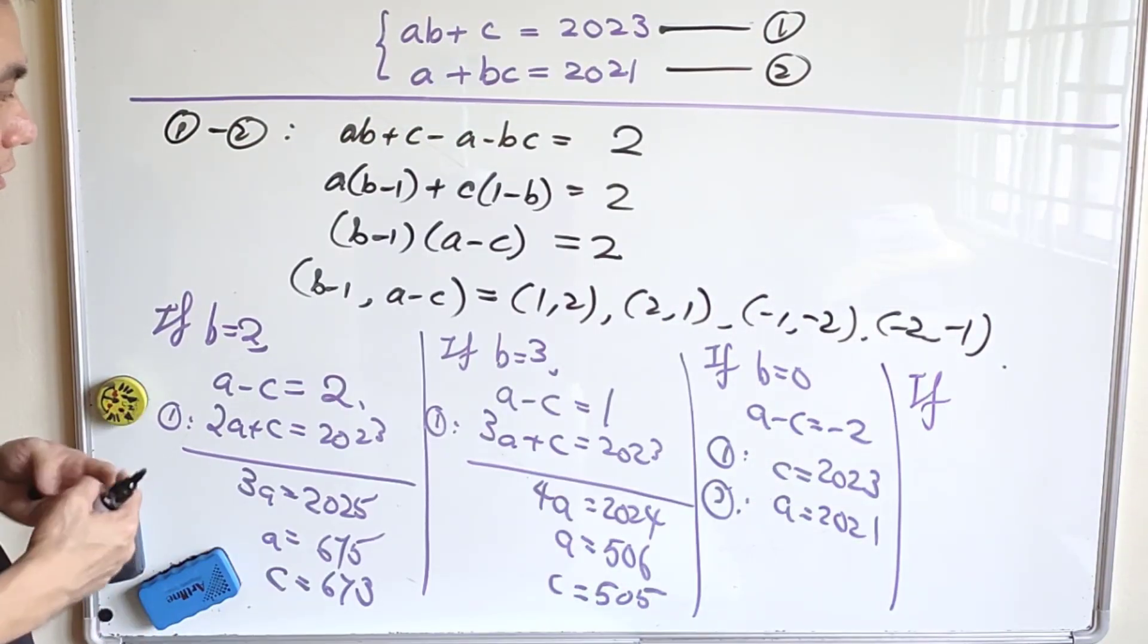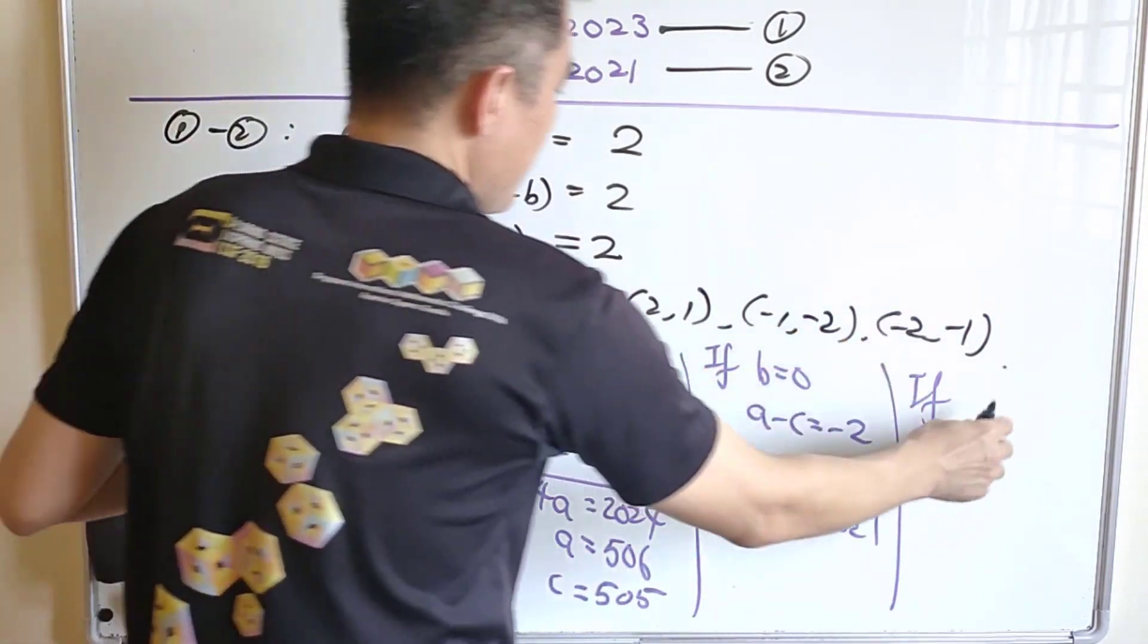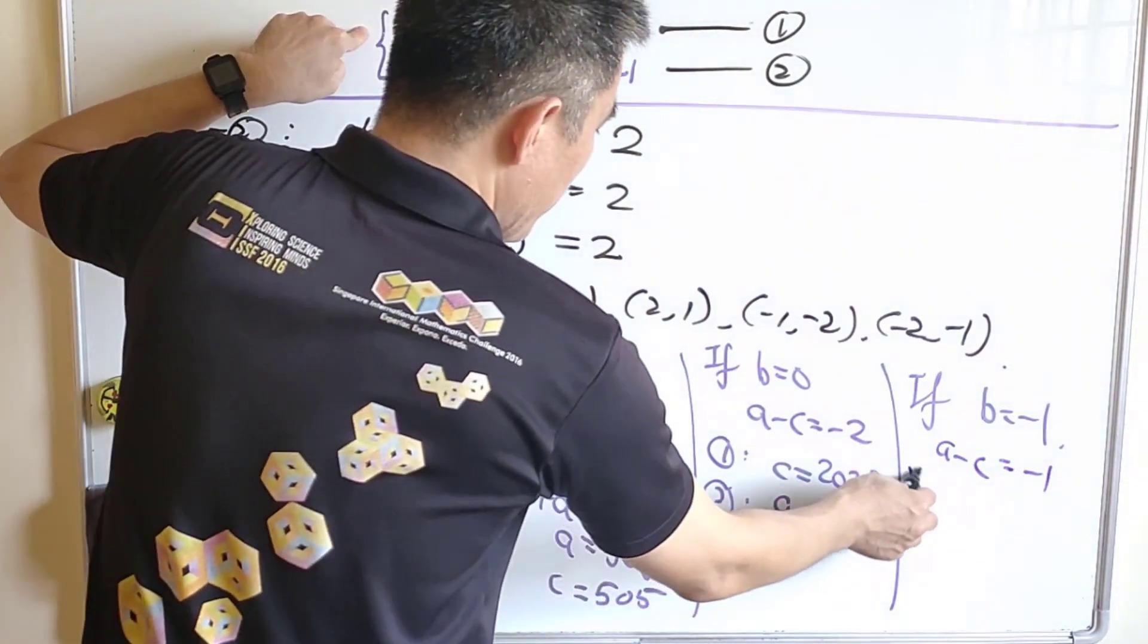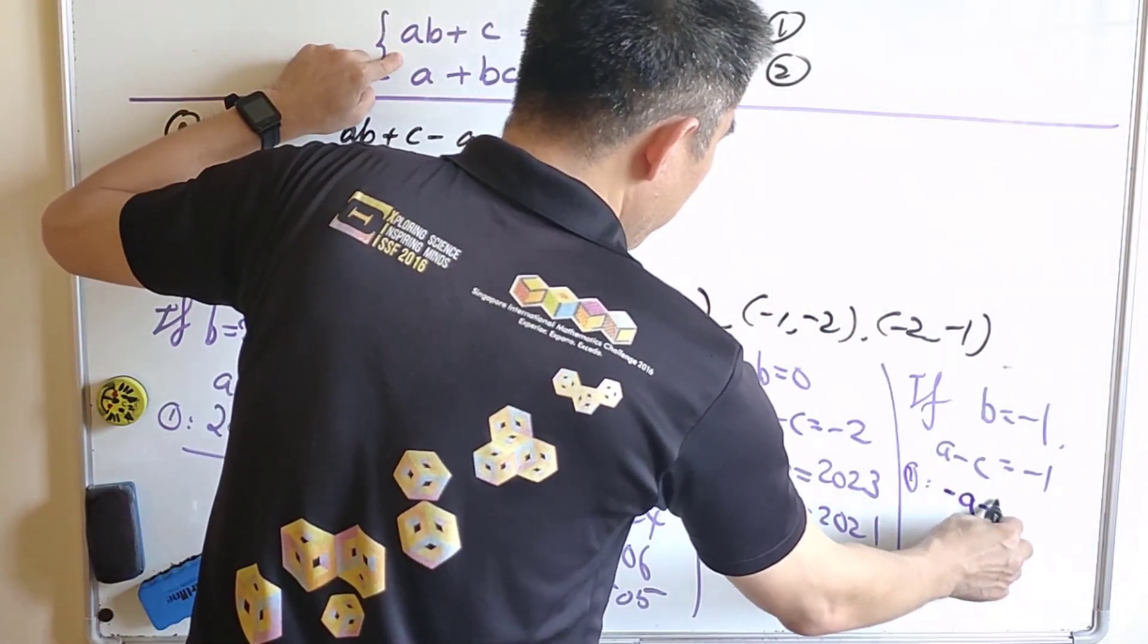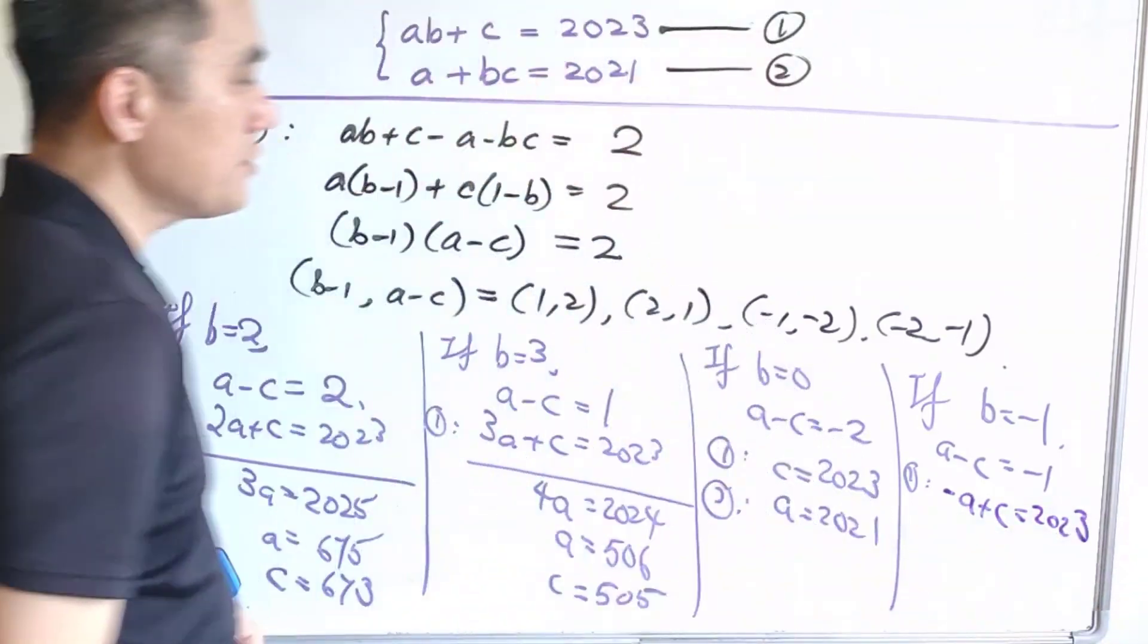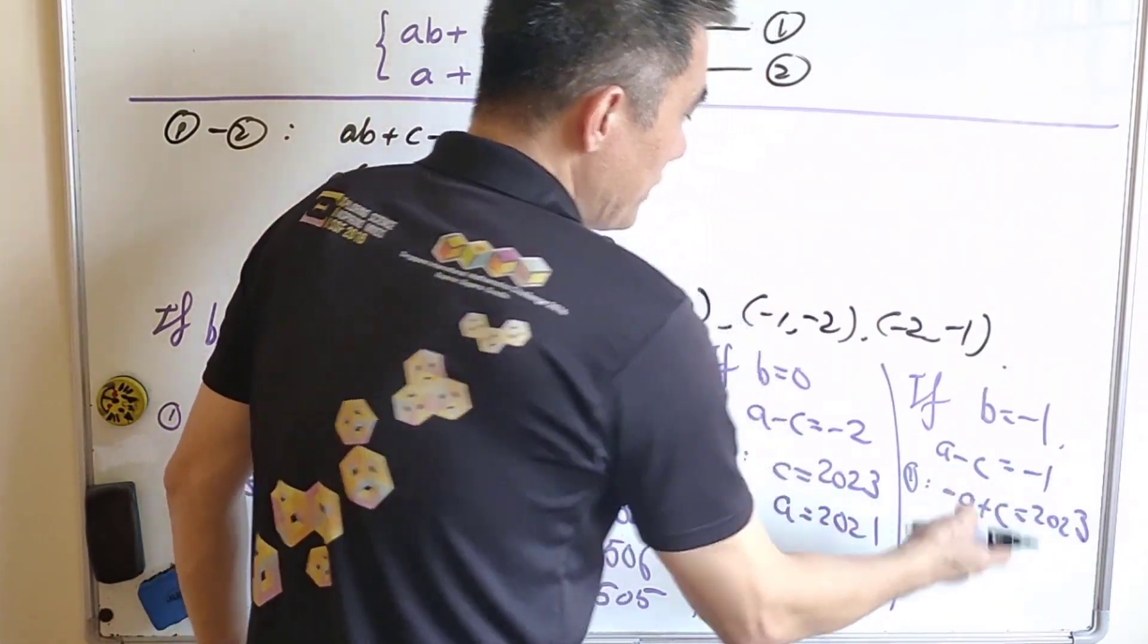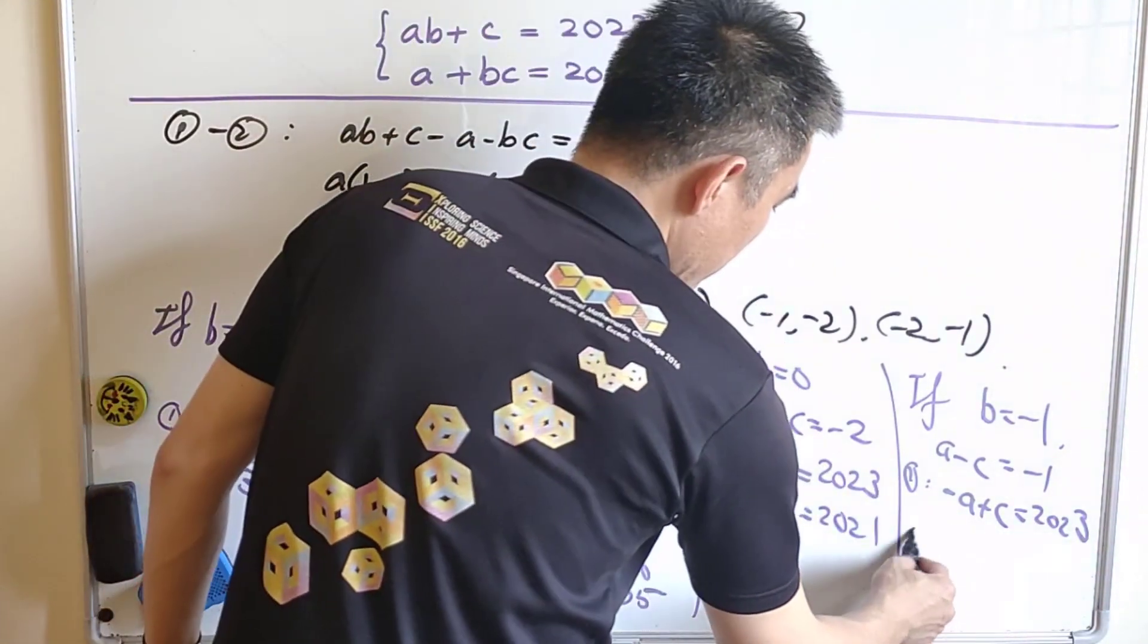Last but not least, let us consider when B equals to negative 1. B equals to negative 1 and A minus C equals to negative 1. So from equation 1, B equals to negative 1 meaning that this is negative A plus C equals to 2023. But this will give us a contradiction because A minus C equals to negative 1 will imply that C minus A equals to negative 1, not 2023. Therefore, there's no solution here.